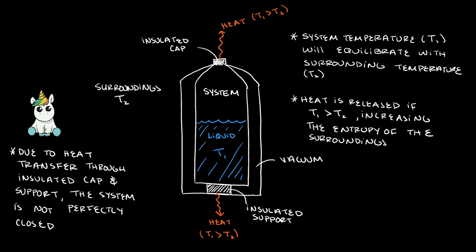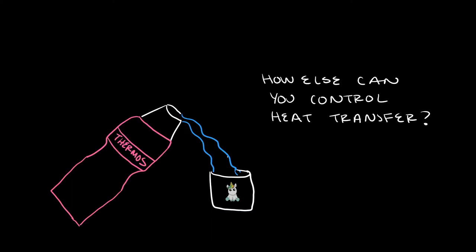The reason why your drink begins to equilibrate with the surrounding temperature T2 is due to conduction that occurs through the top and bottom of the thermos flask. Therefore, we are not dealing with a perfect closed system, and the entropy of the surroundings will increase as heat is released into the environment. Can you think of other methods to insulate materials by controlling heat transfer?